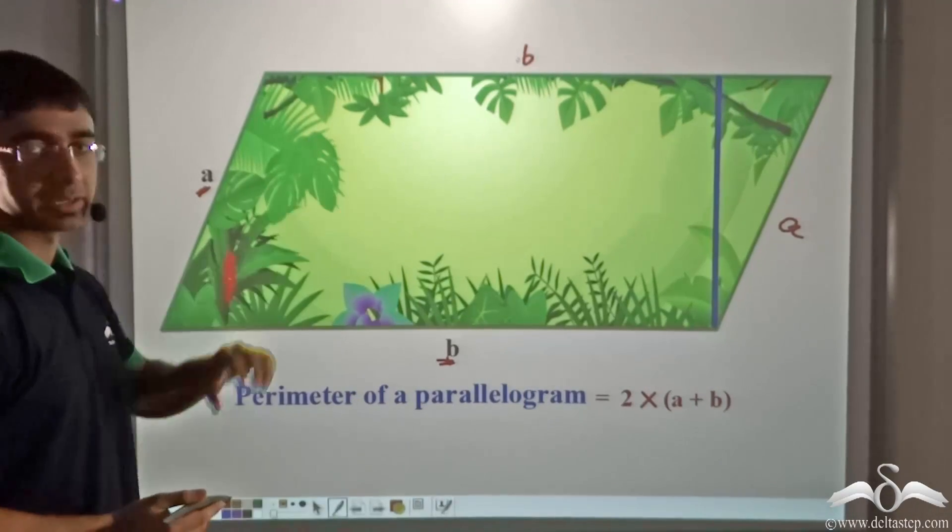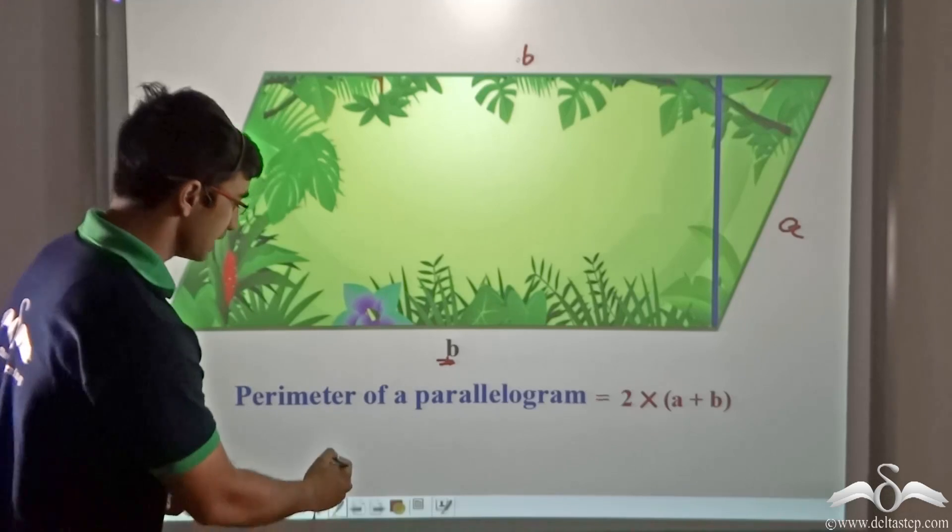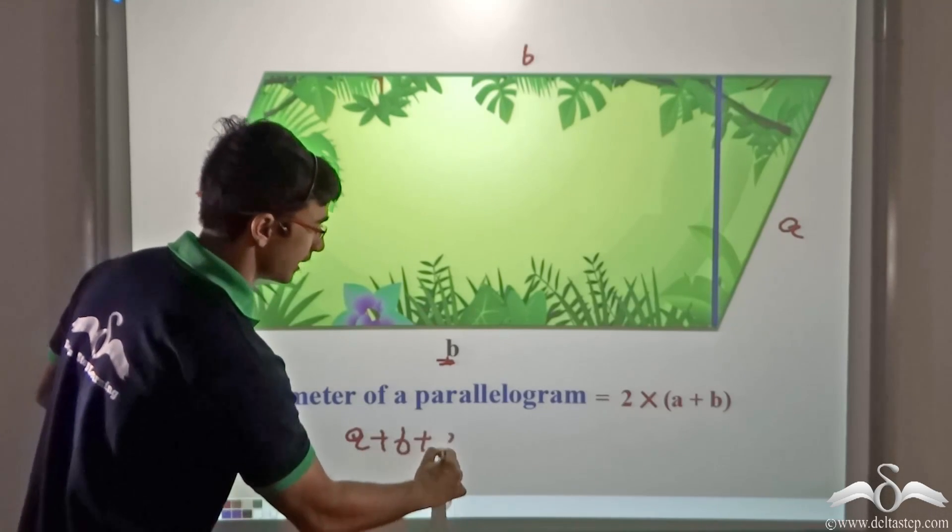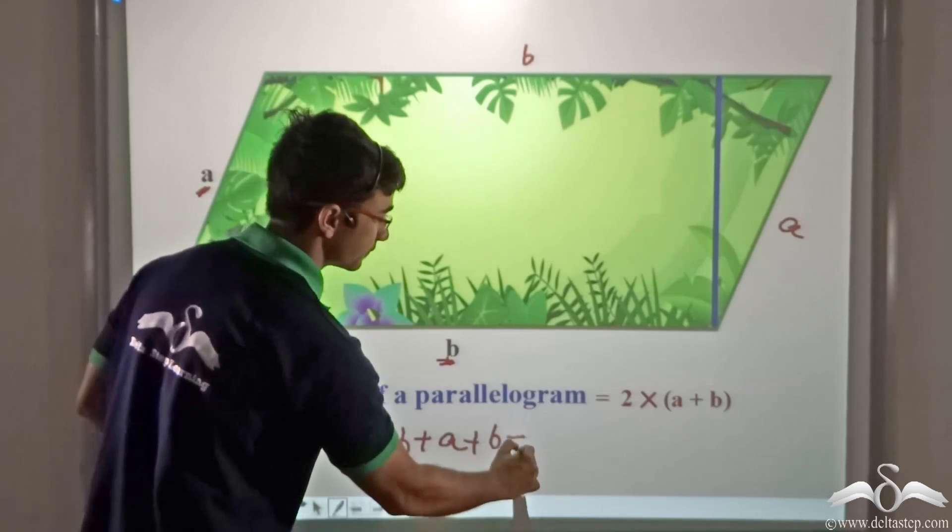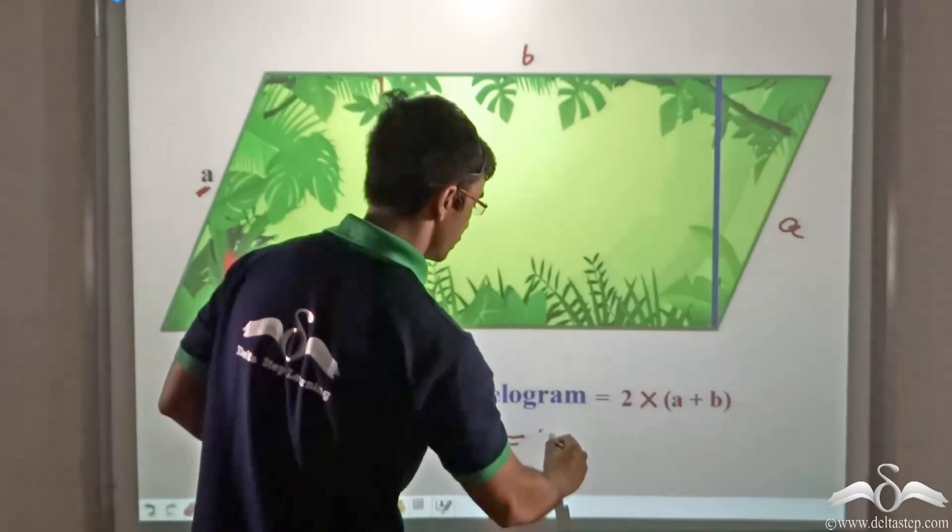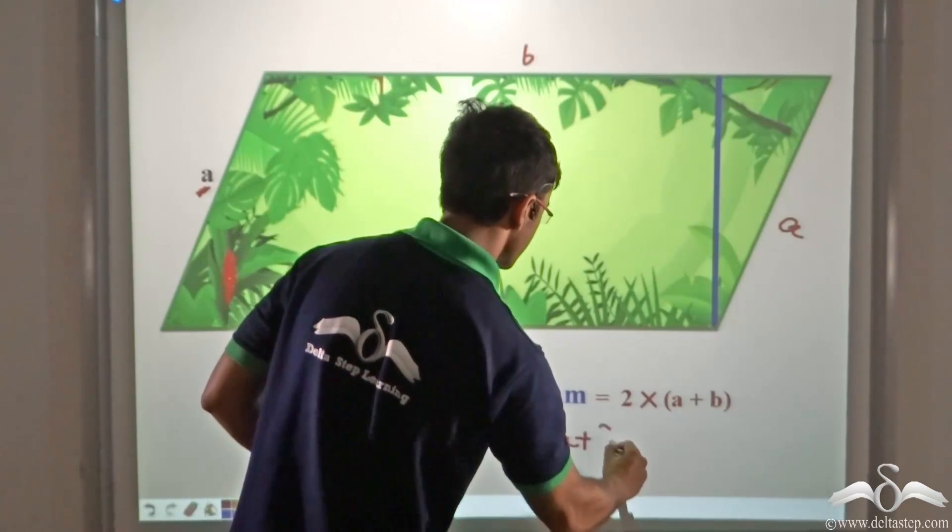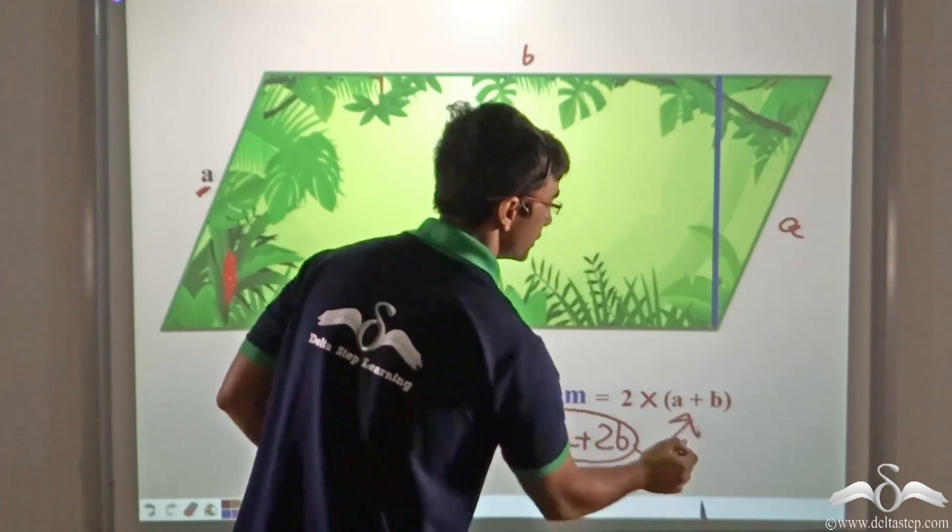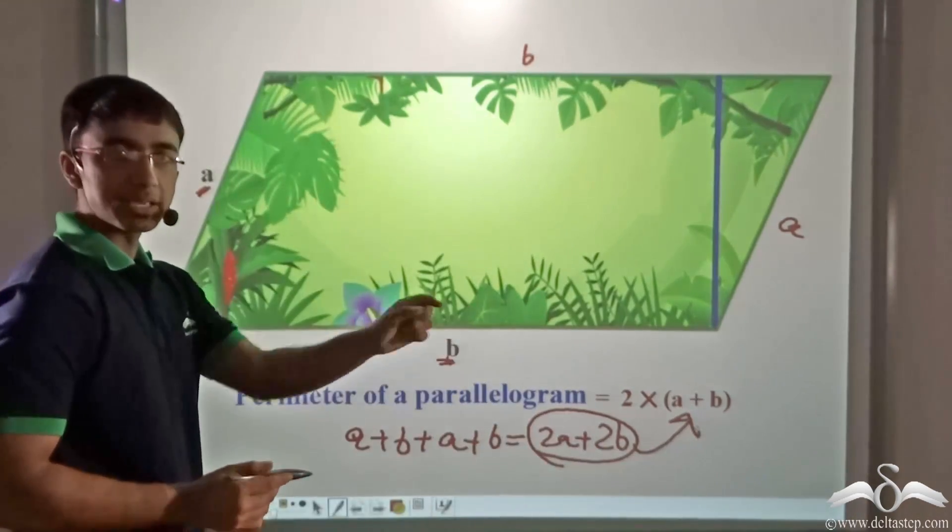Now how can we find out the perimeter? Very simple. The perimeter will be A plus B plus A plus B, which is nothing but 2A plus 2B, and taking two common, we get 2 into A plus B.